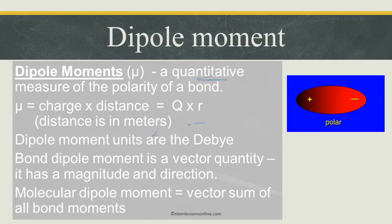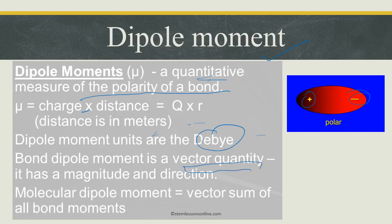Dipole moment is the quantitative measure of the polarity of a bond. 'Di' means two — a positive pole and a negative pole — and dipole moment expresses how polar it is. It is defined as charge times distance, and it is measured using the unit called Debye (D). Bond dipole moment is a vector quantity, meaning it has both magnitude and direction. We will now look in detail at how to determine polarity.